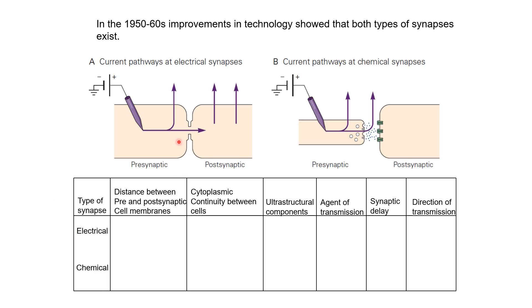In electrical synapses, the two neurons are closer to each other. At the point of contact they are of course connected, but if we look at the separation between the membranes of the presynaptic and postsynaptic neuron in nearby regions, it's on the order of three to four nanometers — a very, very small distance. In the case of chemical synapses, the separation between the membranes is a bit more: 20 to 40 nanometers, an order of magnitude more than in electrical synapses. The cytoplasms of the two neurons are connected in the case of electrical synapses, while they are disconnected in the case of a chemical synapse.